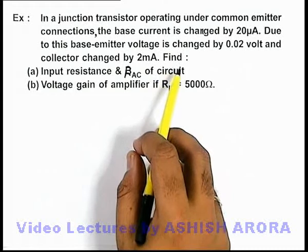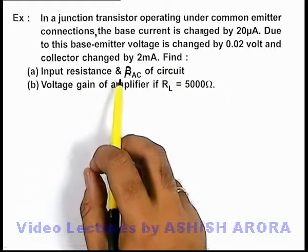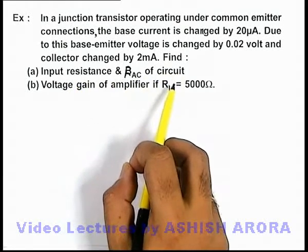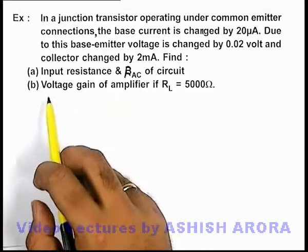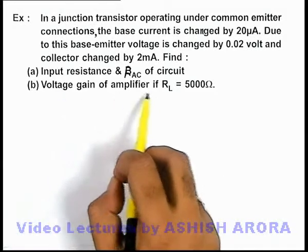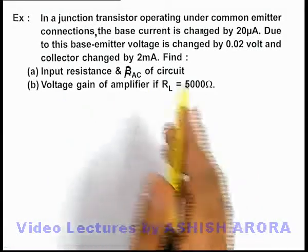Here we are required to find the input resistance and beta AC of the circuit, and we are also required to find the voltage gain of amplifier if load resistance is 5000 ohm.